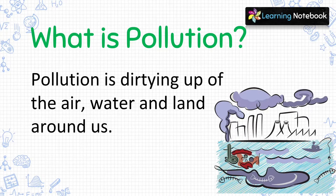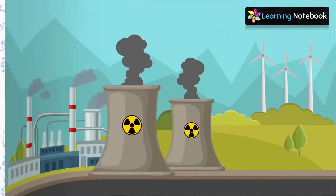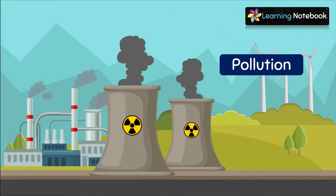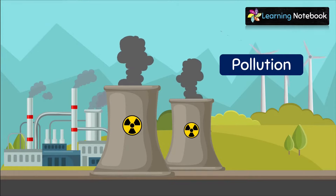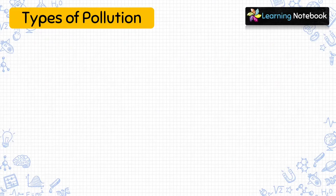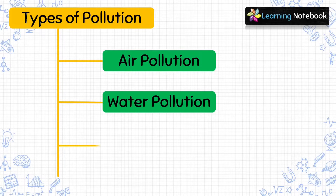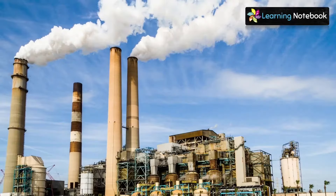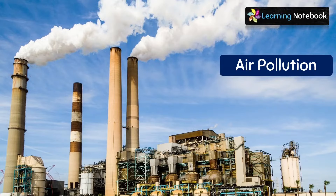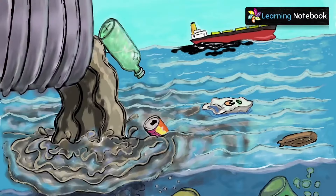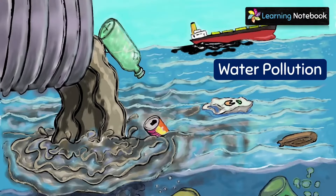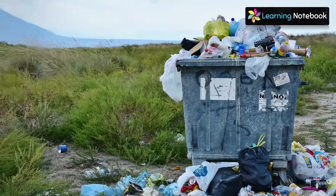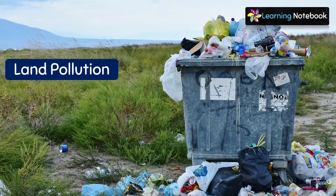Pollution is the dirtying up of the air, water and land around us. This happens when harmful materials get mixed up with the fresh air, water and land. The three major types of pollution are air pollution, water pollution, and land or soil pollution.